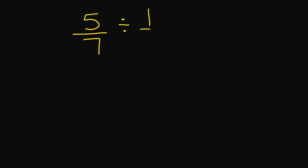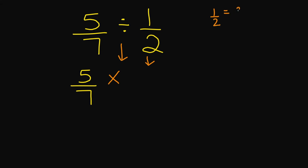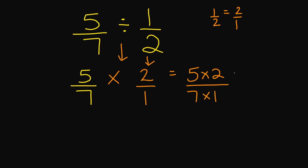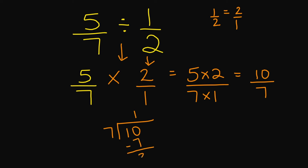Let's try five over seven divided by one over two. Five over seven stays the same. We're going to change division into multiplication. The reciprocal of one over two is two over one. Numerator: five times two. Denominator: seven times one. Five times two is 10, seven times one is seven. Since I have an improper fraction, let's turn this back into a mixed number. Seven goes into 10 one time. Seven times one is seven. 10 minus seven equals three. So your final answer is 10 over seven, or one and three sevenths.